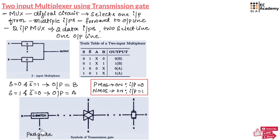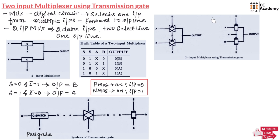This is one more way of representing the transmission gate of a multiplexer. Here again, the select line with a bubble represents a PMOS and the select line without any bubble represents the NMOS, and these two are the inputs. Based on the select line, the inputs will be selected. Depending upon the select lines, we might select input A or B. In transmission gate 1, the P side is connected to S bar and the N side is connected to S. And in transmission gate 2, the P side is connected to S and the N side is connected to S bar.